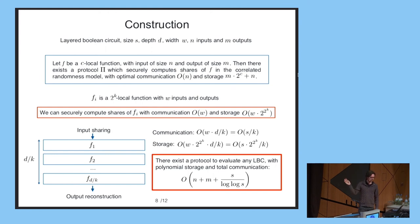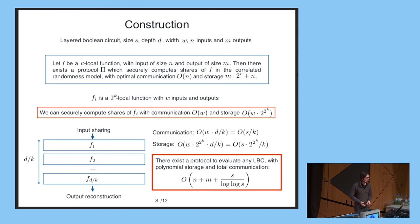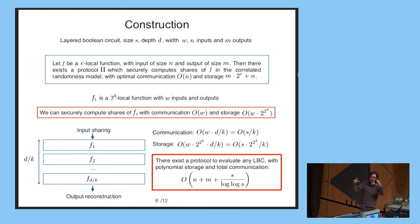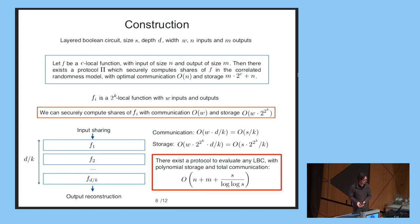This can be extended to malicious security — that's quite simple. You can also extend it to arithmetic circuits. Here you cannot use truth table correlations anymore because a truth table for an arithmetic function over an exponentially large field would be way too big. But if you represent the chunks of your function by multilinear polynomials, you can derive essentially the same approach and obtain a similar result: communication S over log log S group or field elements.